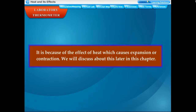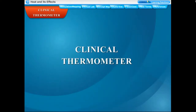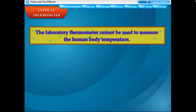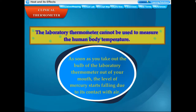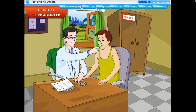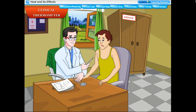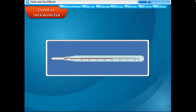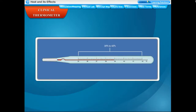The laboratory thermometer cannot be used to measure human body temperature because as soon as you take out the bulb from your mouth, the mercury level starts falling. To measure body temperature, you need a clinical thermometer in which mercury does not fall when the bulb is removed. The construction of a clinical thermometer is the same as a laboratory thermometer, except there is a slight bend (kink) in the stem just above the bulb. This kink prevents mercury from moving back into the bulb when the thermometer is removed from a person's mouth.